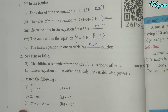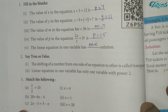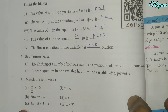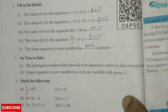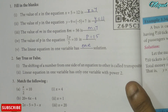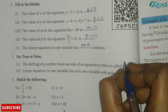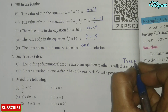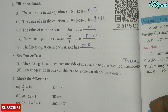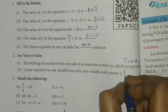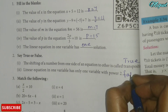Say true or false: The shifting of a number from one side of an equation to the other is called transposition — True. Linear equation in one variable has only one variable with power 2 — False.